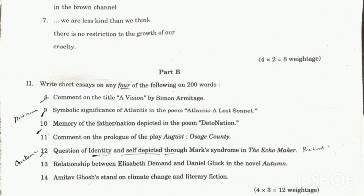The next question asks about the symbolic significance of Atlantis in the poem 'Atlantis: A Lost Sonnet.' You should cover the natural references, symbols in the poem, and the themes connected to it.